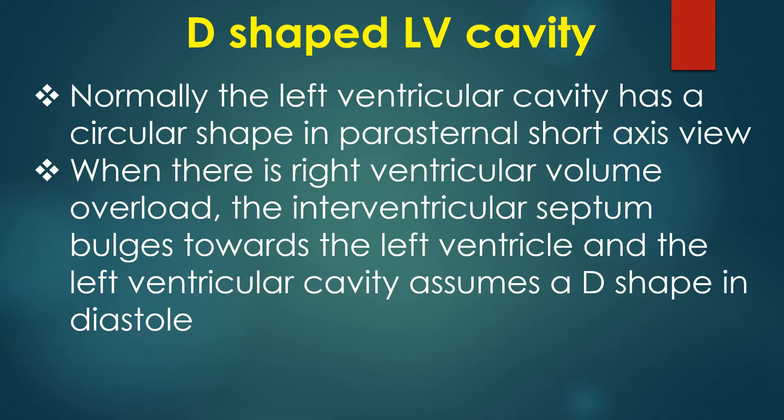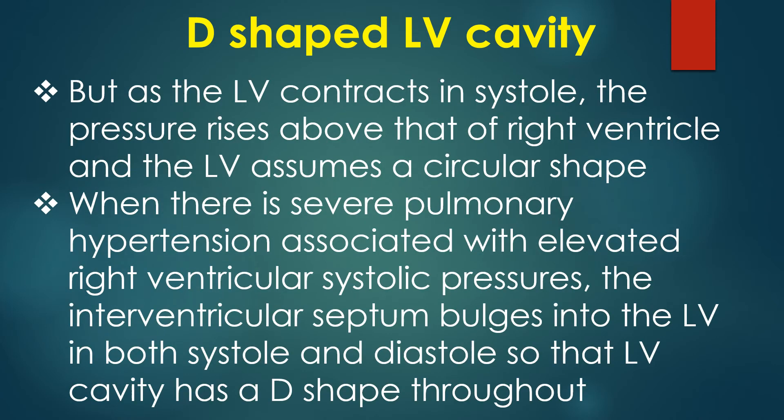Normally, the left ventricular cavity has a circular shape in parasternal short axis view. When there is right ventricular volume overload, the interventricular septum bulges towards the left ventricle and the left ventricular cavity assumes a D shape in diastole.